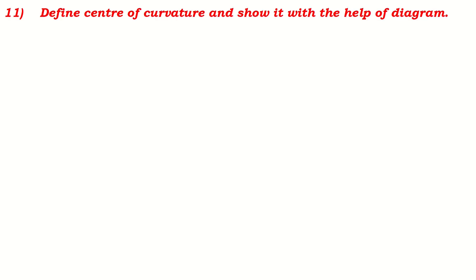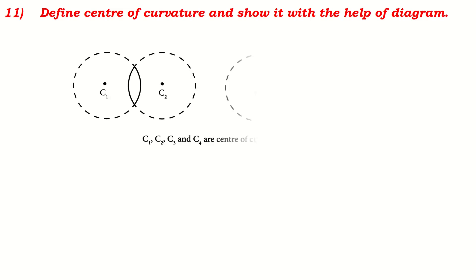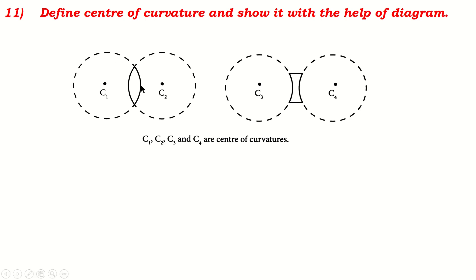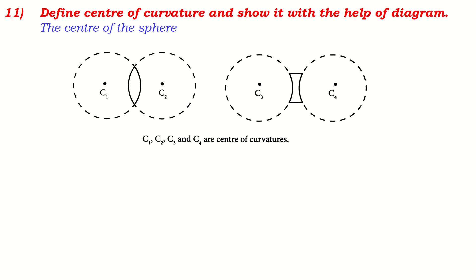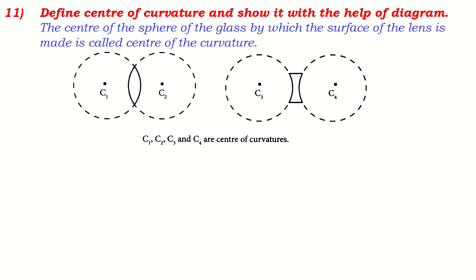Define center of curvature and show it with a diagram. In the diagram, this is the center of the spherical glass from which the surface of the lens is made. This surface forms this center, and this is the part of that sphere. In the same way, in case of a concave lens, each surface has its own center — named C1, C2, C3, C4 for convenience. The center of the sphere of glass by which the surface of the lens is made is called the center of curvature.